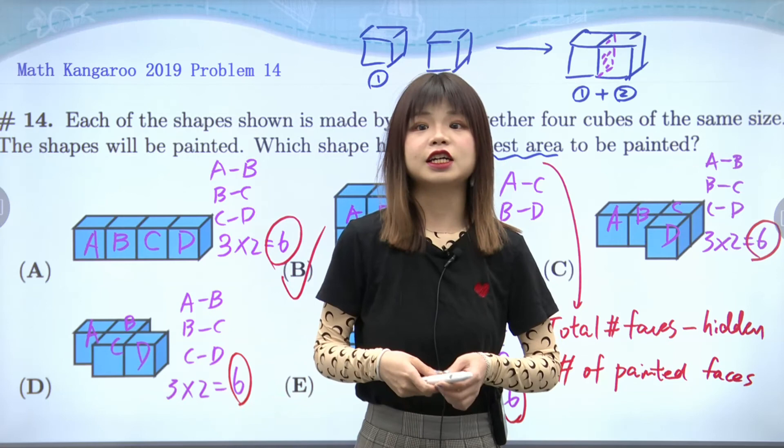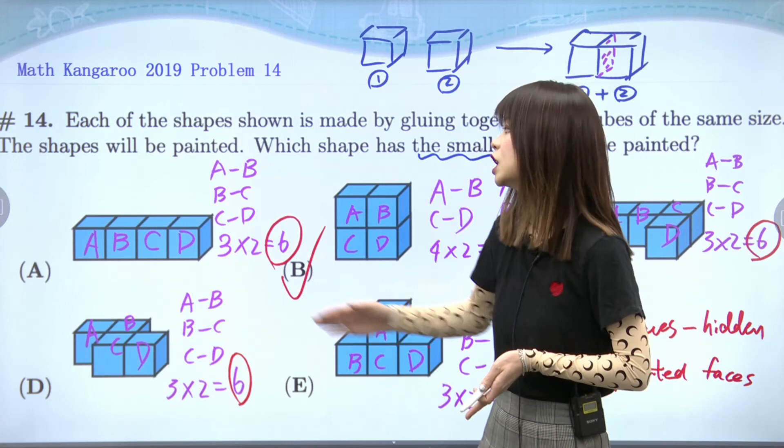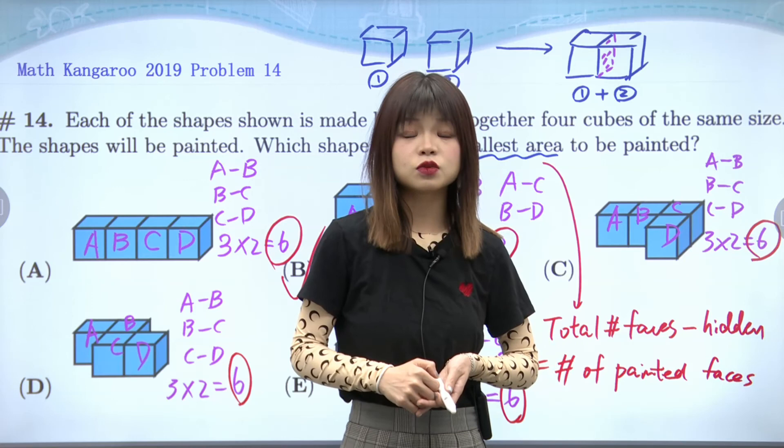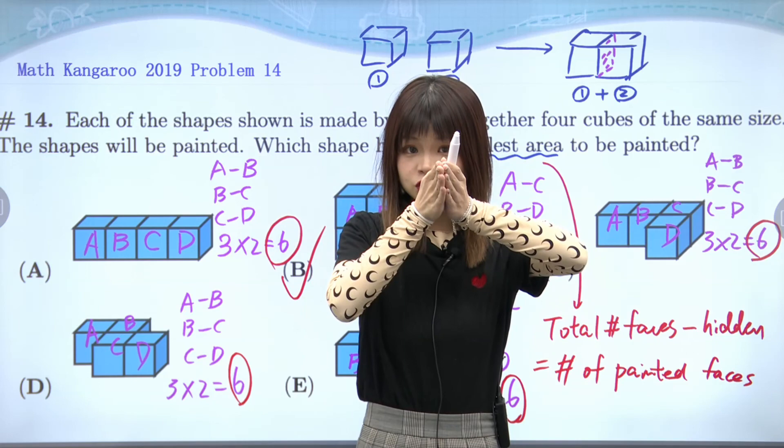Okay guys, so now you know that to find the smallest area to be painted for the same number of cubes, you just find how many kissing faces there are. Remember, for each pair of kissing faces, we have two hidden faces because when two cubes connect, two faces are kissing each other. Very good job, everyone — I hope you enjoyed this question, and I'll see you next time. Bye!